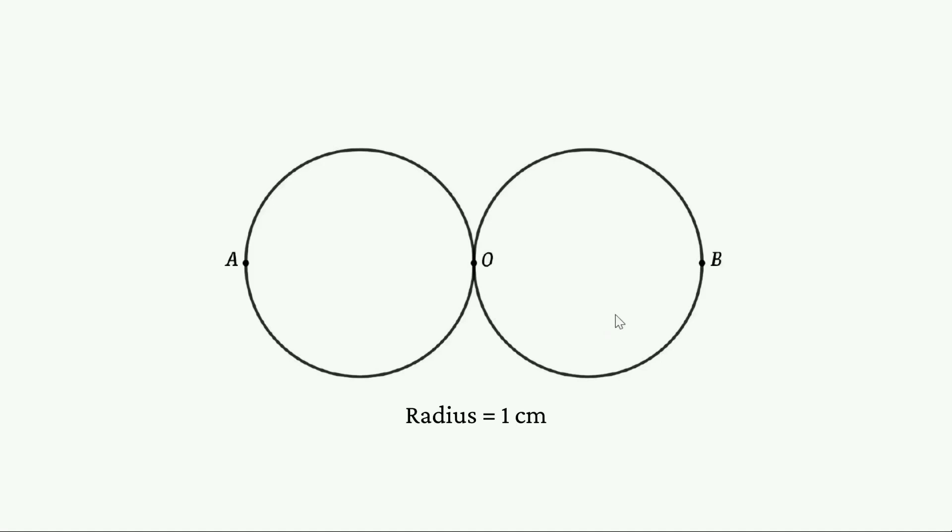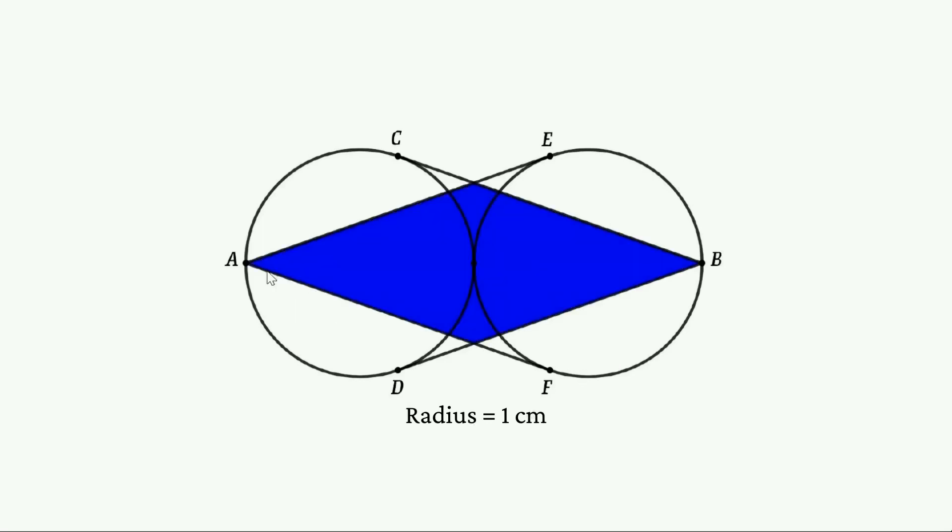Here A, O and B are in a straight line. B, C, B, D, A, E and A, F are tangents. Then find the area of blue parallelogram.